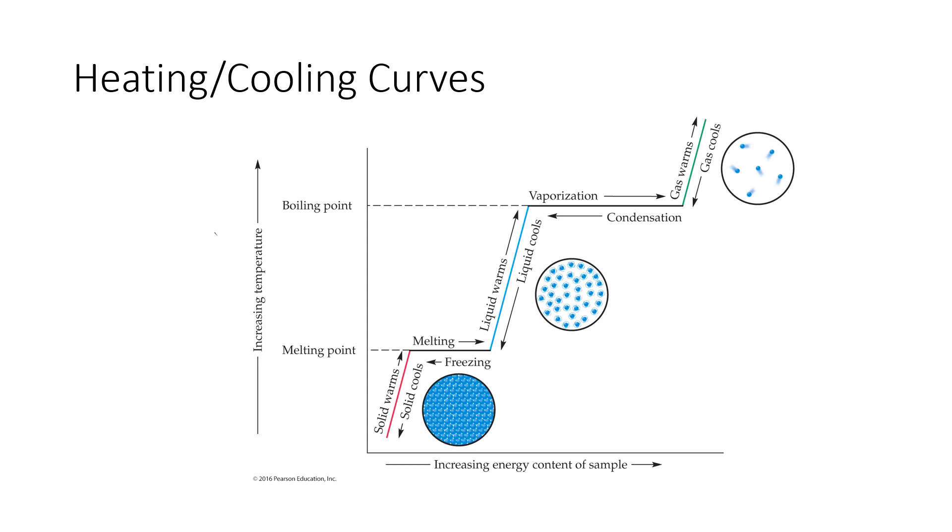This vertical axis is showing us the temperature. And so as we move higher on the vertical axis, we're looking at higher temperatures. And then this horizontal axis is known as increasing energy content of sample, which they're trying to get around the issue of how extra energy is being dumped into the sample. So just for simplicity's sake, you can imagine that the sample has been placed on something like a hot plate. And then this horizontal axis basically becomes time because as more time passes, the hot plate is putting more energy into the sample. And so just think of this as being time heated.